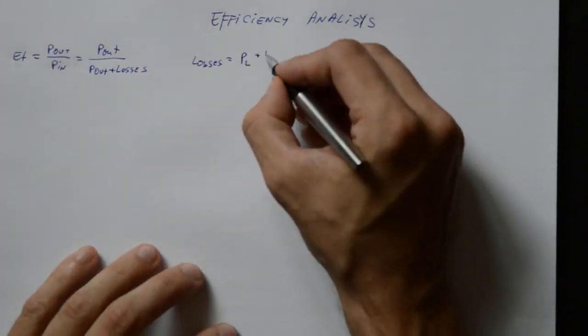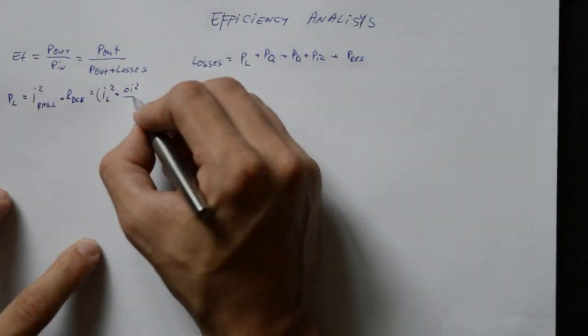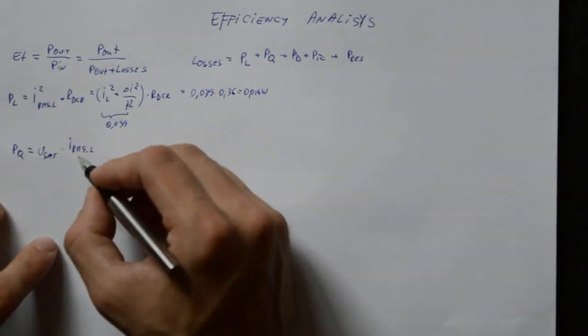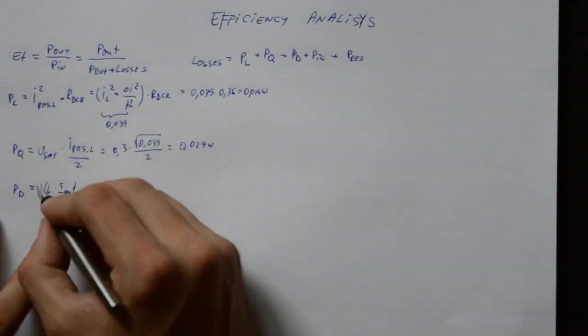Well, if we analyze the efficiency from a mathematical point of view, and look at all the major contributors, the inductor resistive losses, transistor conduction losses, diode losses, IC current consumption, and feedback resistor losses,